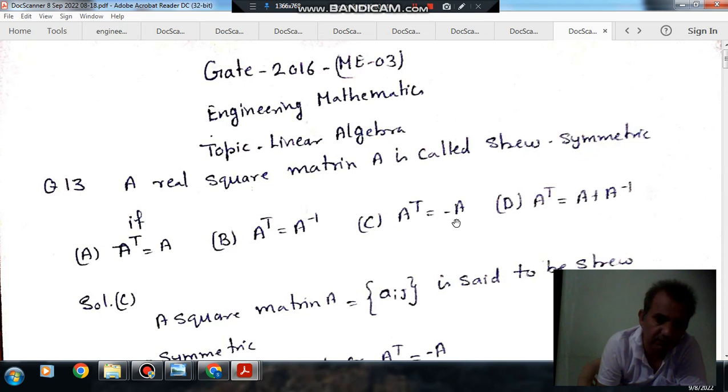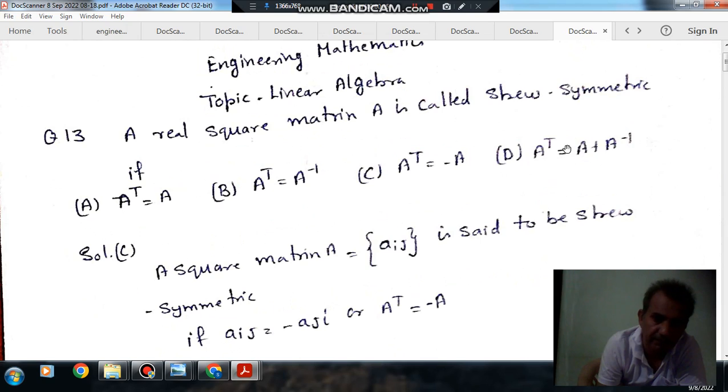option C, A transpose is equal to minus A; and option D, A transpose is equal to A plus A inverse.